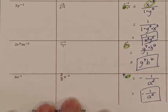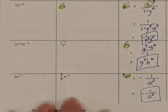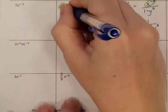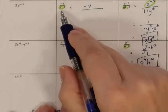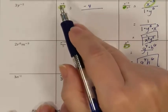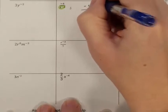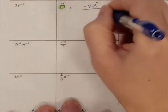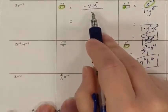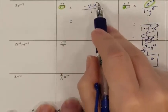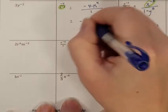Next problem. This K is the only thing that has a negative exponent, so only K is going to move. The negative 4 stays exactly where it was in the numerator. K was in the denominator — it cannot stay there. It moves to the numerator, and when it moves, the exponent turns positive. The denominator is empty, so it becomes a 1. Anything over 1 is just the numerator, so the final answer is negative 4K to the 4th power.